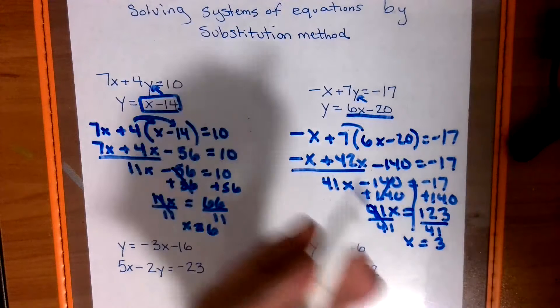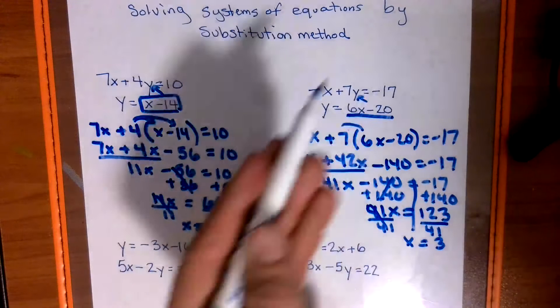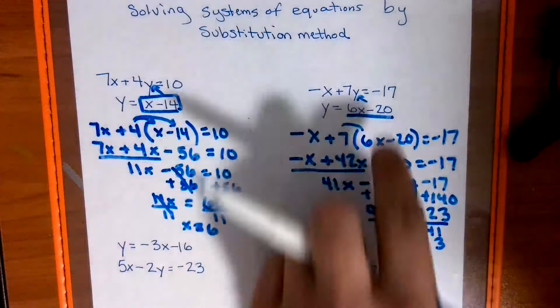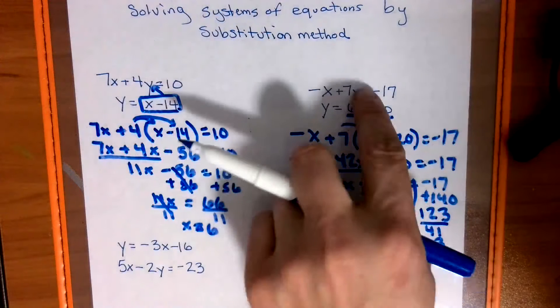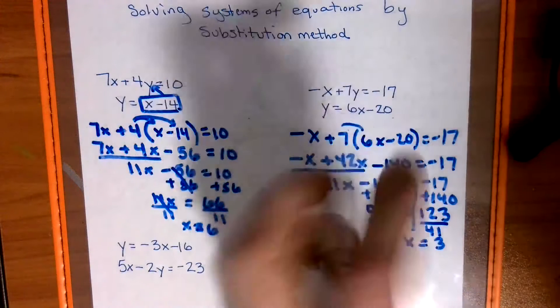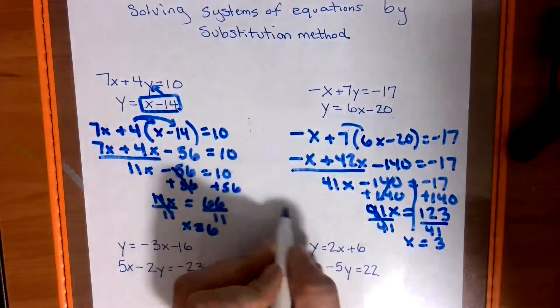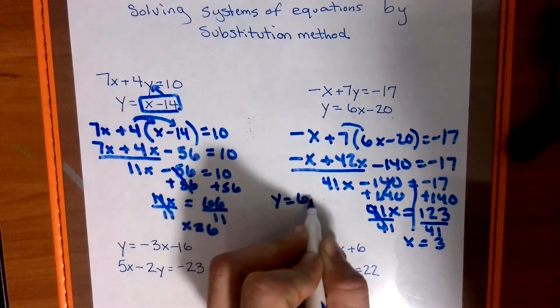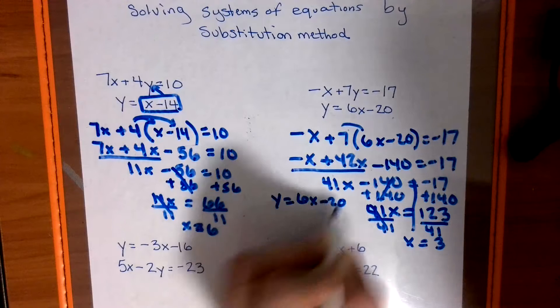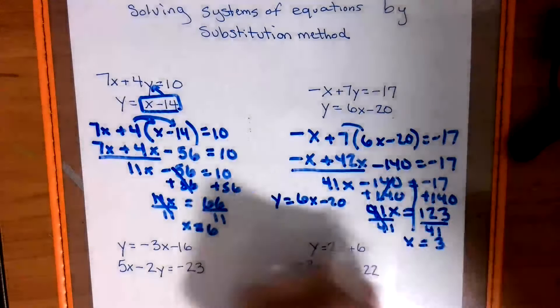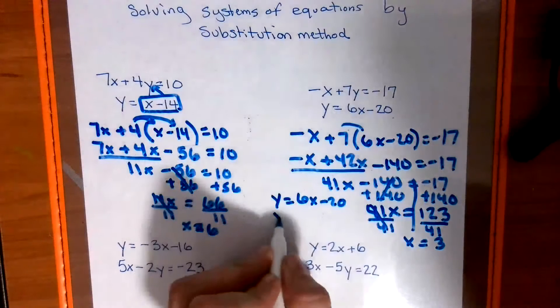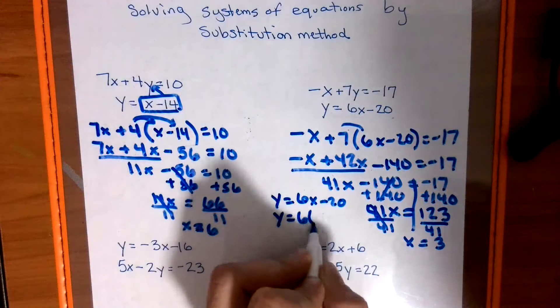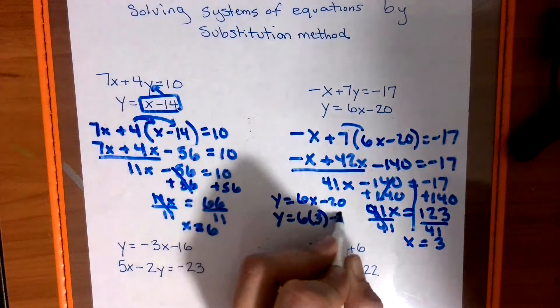And now we have to plug it back into one of the top two equations. I would say pick the bottom one because it's easier. So I rewrite the bottom one. And in place of this x, I'm putting a 3.